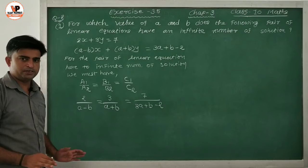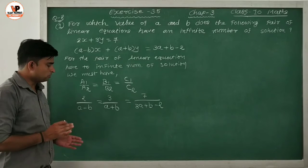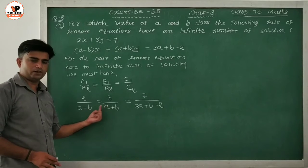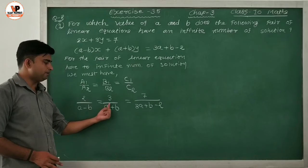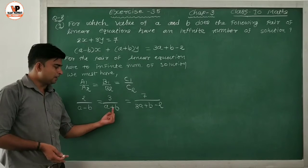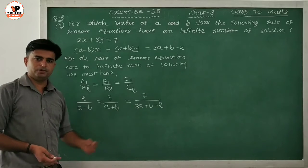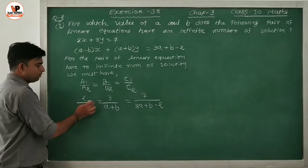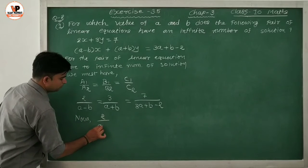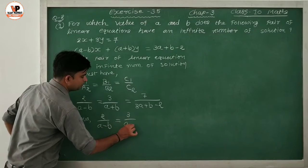Toh hume is type ka ek ratio mil jayega. Ab inmein se hume A aur B ki value find karni hai. Kaise find karenge? Sabse pehle in dono ki comparison karenge — A1/A2 aur B1/B2. Uske baad in dono ki comparison karenge, toh easily value mil jayegi. Pehle inko compare karte hain: 2/(A - B) = 3/(A + B).